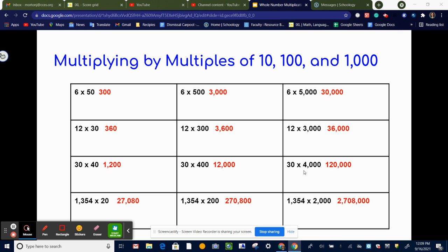Again, we can say 3 times 4 is 12, and then you count up how many zeros you have. So 1, 2, 3, 4. So you add on 1, 2, 3, 4 zeros. So another way to think about it is you can say 30 times 4 is 120, and then add the three zeros.